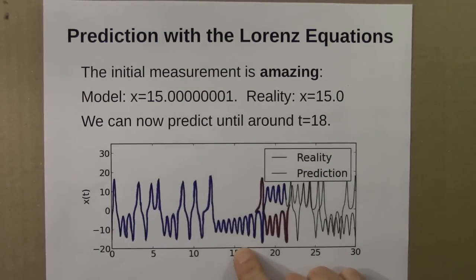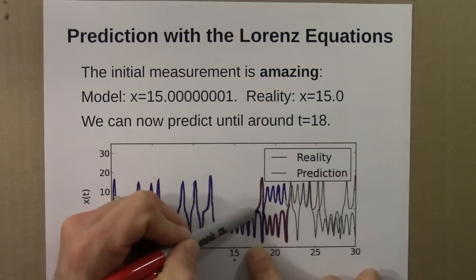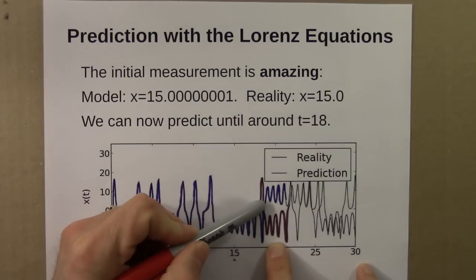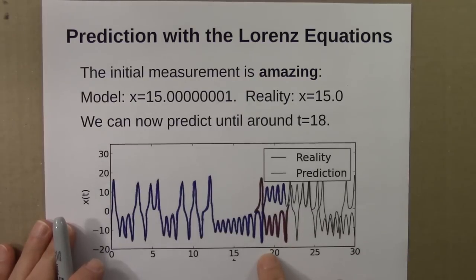Yet then again, as before, the reality, that's the red curve, diverges from the blue curve, and then they become very different after this. We have a very good measurement, and we can extend our prediction now all the way out to 18. But after 18, our prediction becomes more or less worthless.